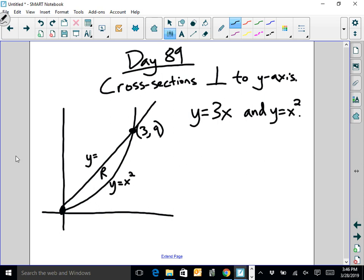We don't have to worry about intersections because it's labeled for us. We label it 3, 9. And the first question they'd probably ask is for you to find the area of R. As we're doing all this crazy stuff, don't forget about the simple stuff like finding the area of a bounded region.